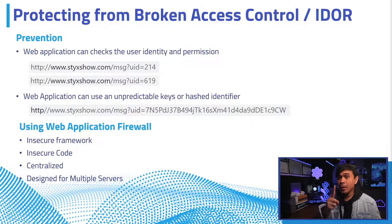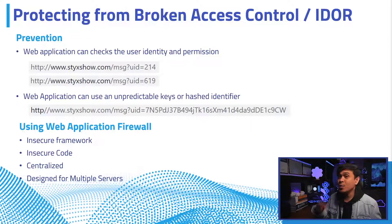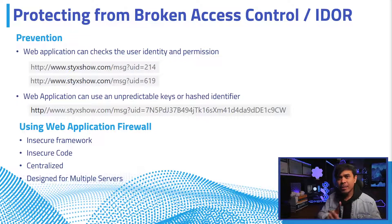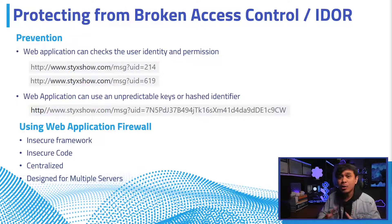Despite being number one on the OWASP vulnerability list, preventing broken access control or IDOR is very simple. Basically, we just need two things. First, the web application checks the user identity and permission before the user accesses the specific resource or page. For example, the application must check first if the user session cookies correspond to the user ID before the application grants access to the requested resources.